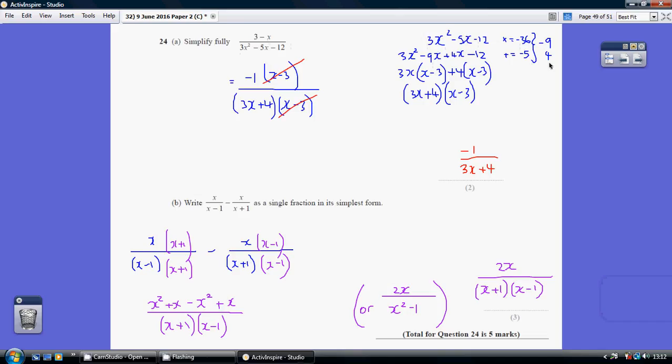That gives me -9 and +4. I then go from a 3-term problem to a 4-term problem by splitting this middle term, my -5x, into -9x and +4x.